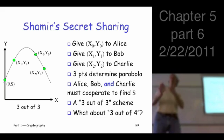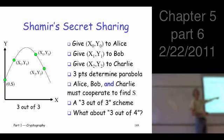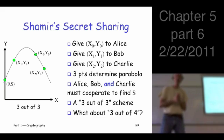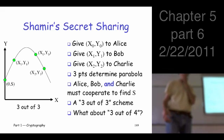How about three out of four? Can we do three out of four? How would we do that? Just add another point - put another point on there. Any three can determine it, but fewer than three cannot. Any three or more. So this is easy - it's easy to construct such systems.